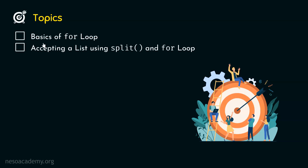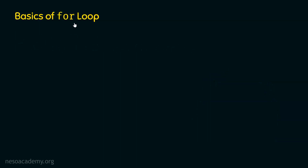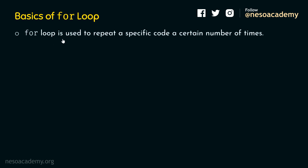Let's first understand the basics of for loop. What is a for loop and what does it do? A for loop is used to repeat a specific piece of code a certain number of times. Whenever we want to repeat a specific piece of code a number of times, we can use the concept of for loop.